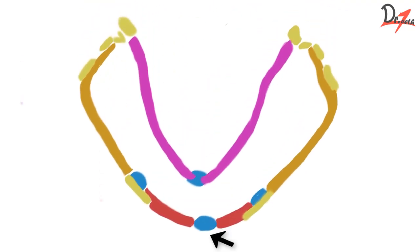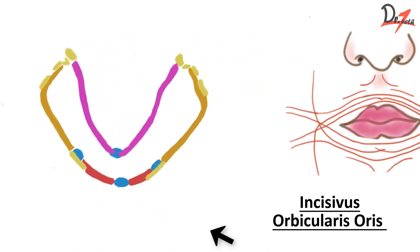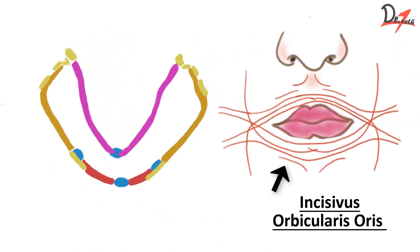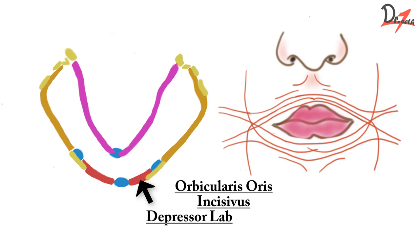First is the labial frenum. It is influenced by mainly two muscles: the incisivus muscle and orbicularis oris muscle. The labial vestibule is also influenced by various muscles — orbicularis oris, incisivus, and depressor labii oris muscle. That is why when the mouth is opened wide, the sulcus becomes narrow.